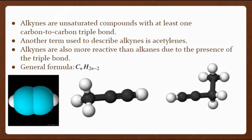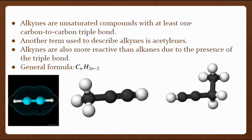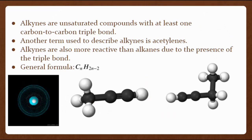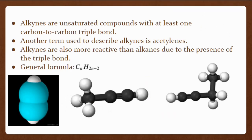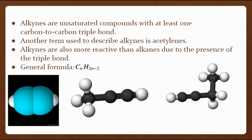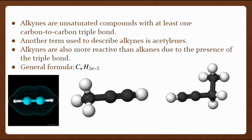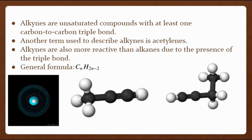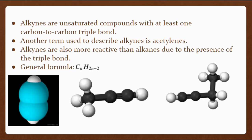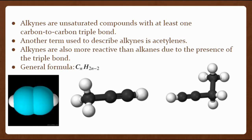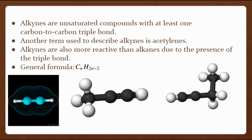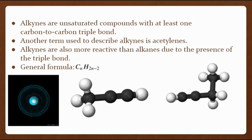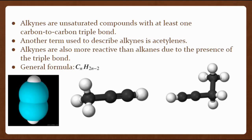Alkynes are unsaturated compounds with at least one carbon-carbon triple bond. Their general formula is CₙH₂ₙ₋₂ for molecules with one triple bond and no rings. Another term used to describe alkynes is acetylenes. Alkynes are also more reactive than alkenes due to the presence of a triple bond. Alkynes undergo many of the same reactions as alkenes but can react twice because of the presence of two pi bonds in the triple bond.